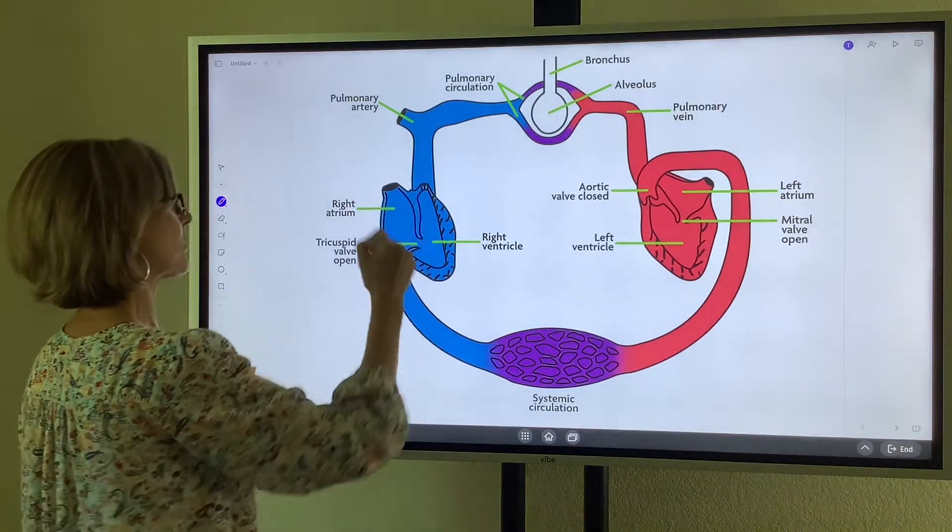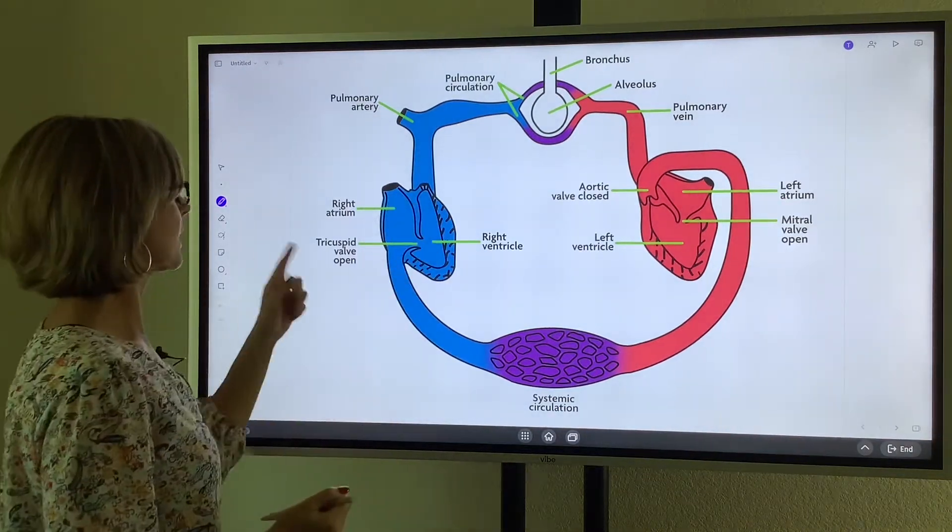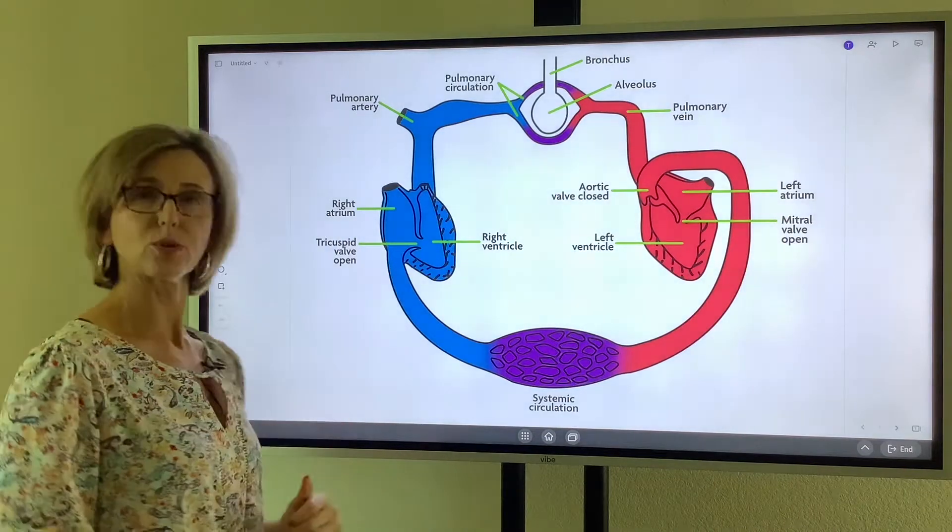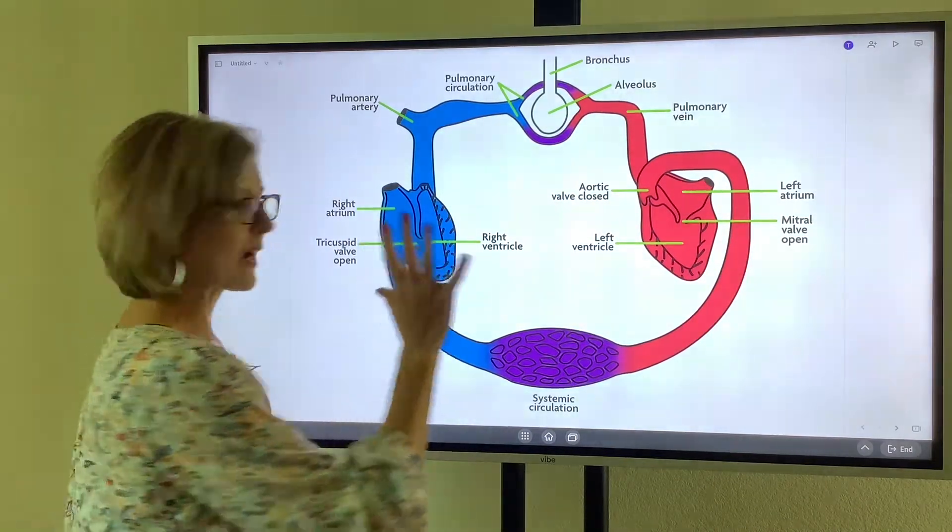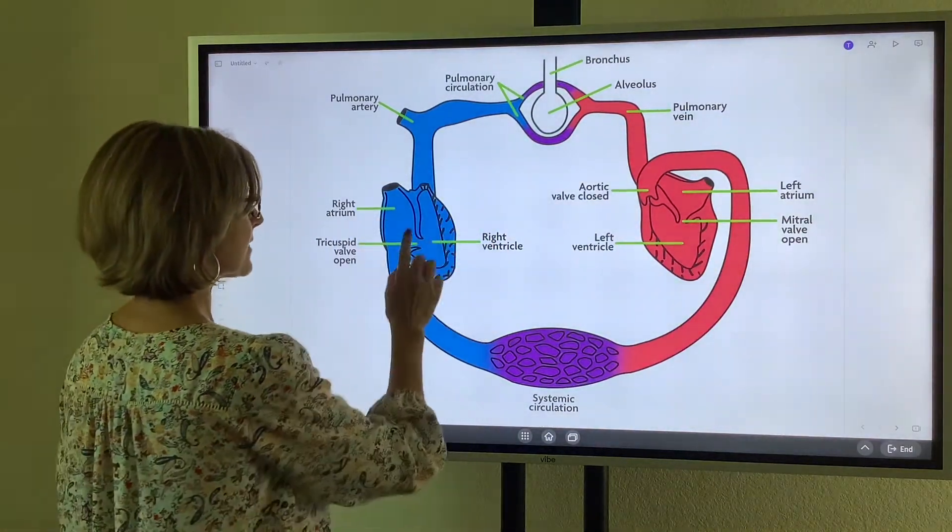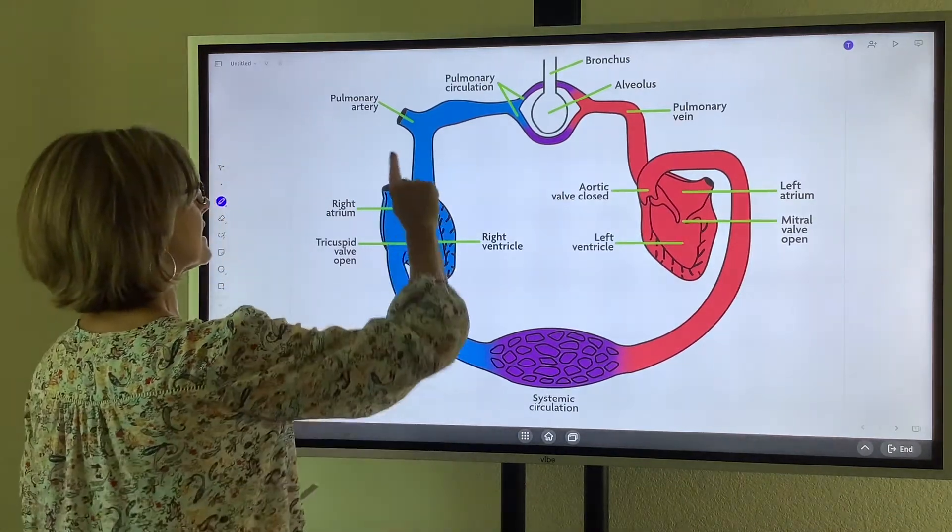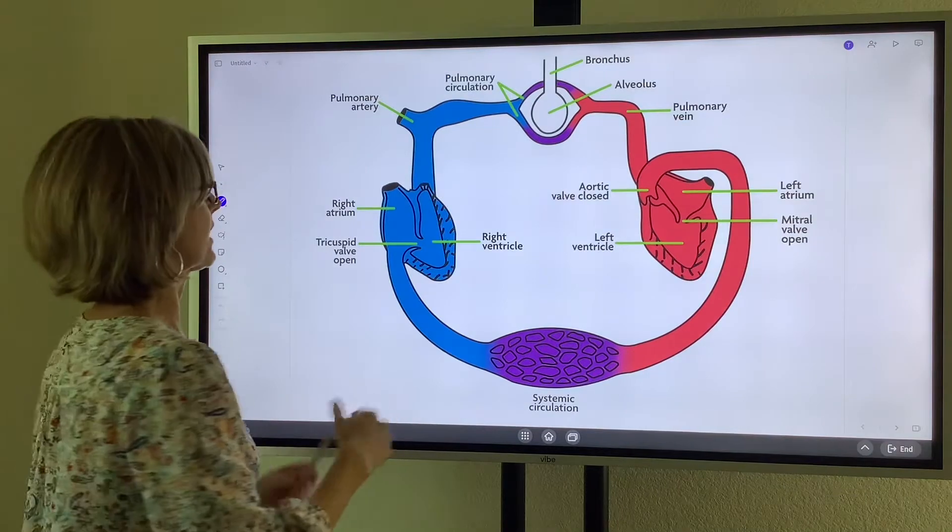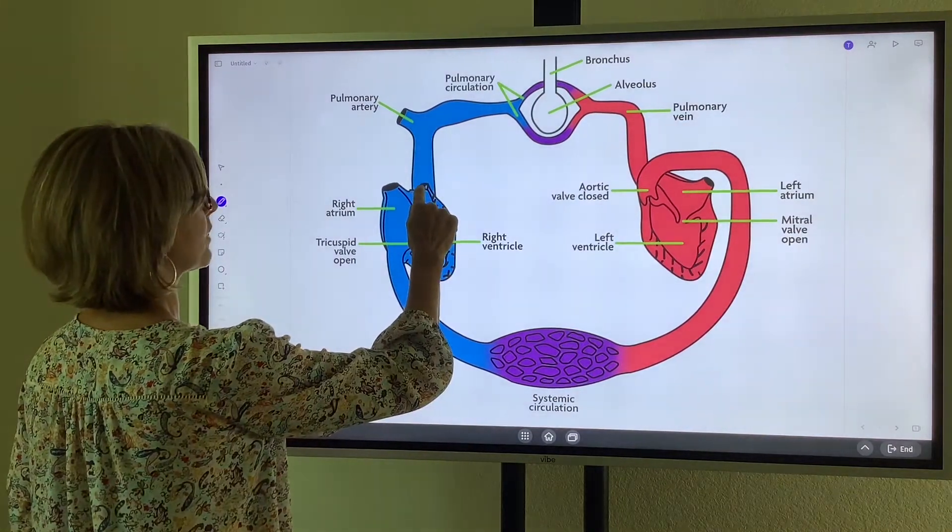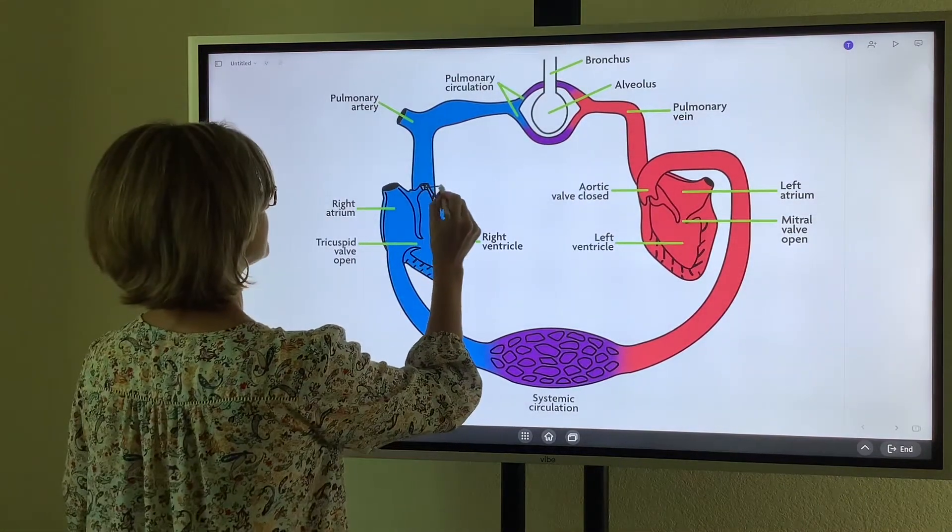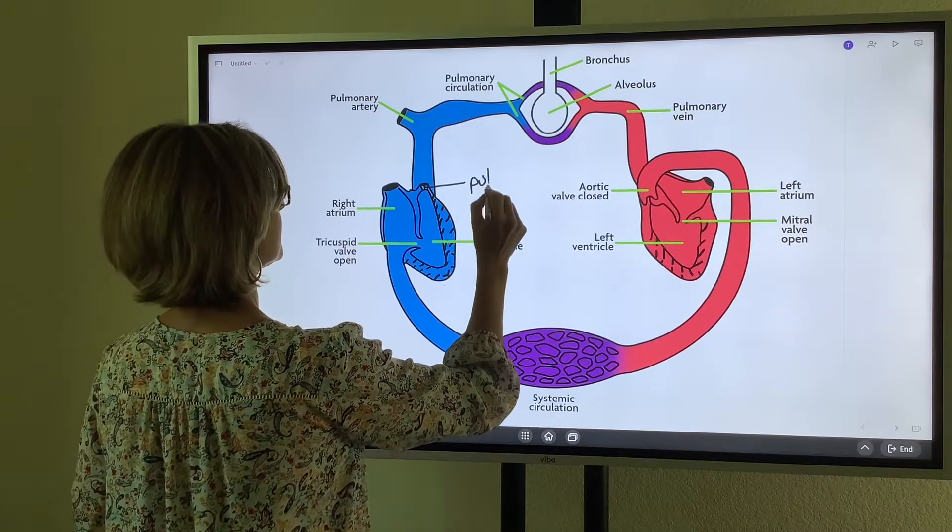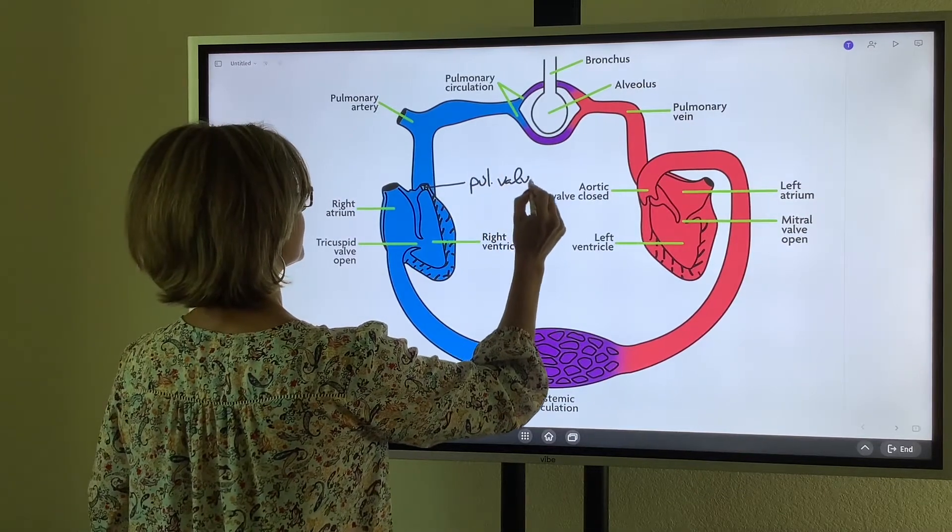From the right side of the heart, the right atrium, blood moves through the tricuspid valve into the right ventricle. When the right ventricle squeezes, that blood moves through the pulmonic valve into the pulmonary artery. The pulmonic valve is this little valve right here.